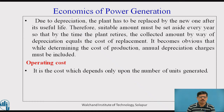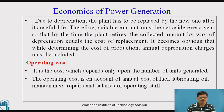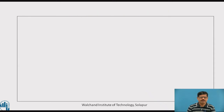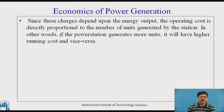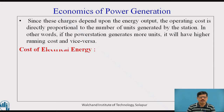Now let us come to the operating cost. It is a cost which depends only upon the number of units generated. The operating cost accounts for the annual cost of fuel, lubricating oil, maintenance, repairs, salaries of the operating staff, and various other chemicals. Since these charges depend upon the energy output, the operating cost is directly proportional to the number of units generated by the station. In other words, if the power station generates more units, it will have higher operating or running cost, and vice versa.